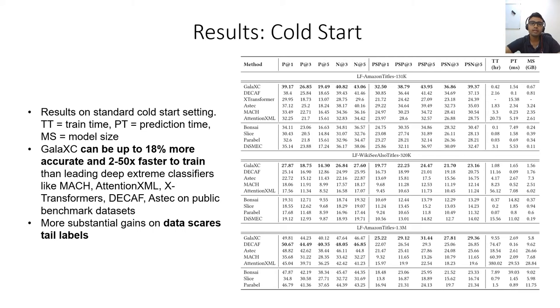Compared to leading deep-extreme classification algorithms like MAC, AttentionXML, X-Transformers, Decaf, and Aztec, Galaxy can be up to 18% more accurate while being 2 to 50x faster to train and 10x faster to predict.